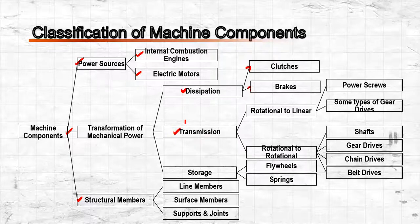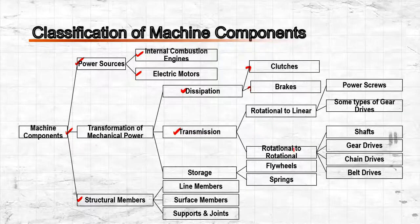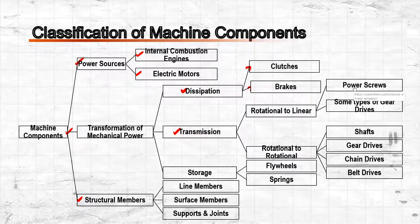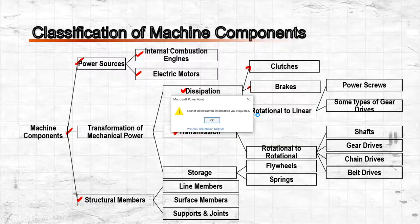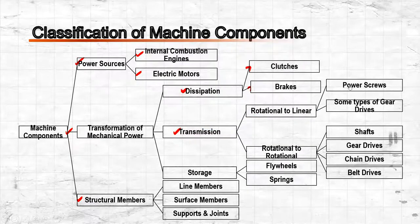Components that involve transmission of power from rotational motion to linear motion include power screws and some types of gear drives — for example, the rack and pinion. The gear rotates while the gear rack has linear motion, converting rotational to linear motion.